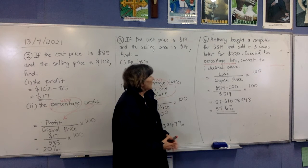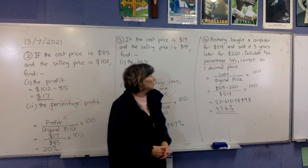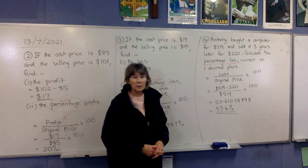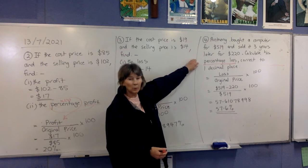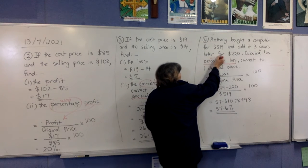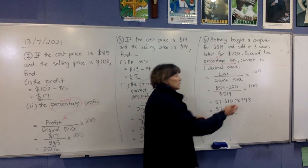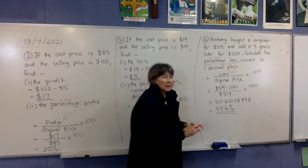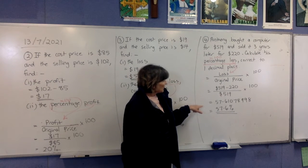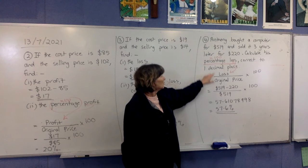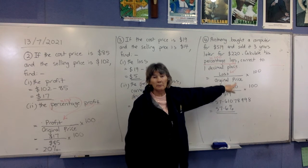Number four is a word problem: Anthony bought a computer for $519 and he sold it three years later for $220. Calculate his percentage loss correct to one decimal place. They're not leading you through this question — you need to find the percentage loss yourself. The word 'percentage' means times by 100, the word 'loss' goes to the top of the fraction, and the original price always goes on the bottom. This time we actually have to find the loss: take the two prices and subtract them — $519 minus $220.